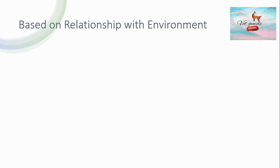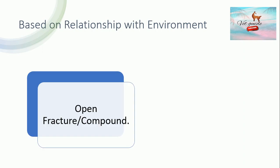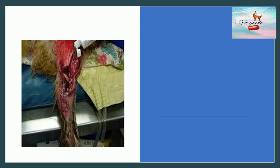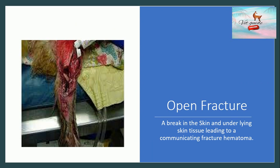Looking at the classification of fracture on the basis of relationship with environment, on this basis a fracture can be classified as an open fracture, also known as a compound fracture, and a closed fracture, also known as a simple fracture. An open fracture is one in which there is a break in the skin and the underlying soft tissue, leading to a communicating fracture hematoma. Open fractures have two further sub-classifications: the Gustilo classification and Muller's classification.